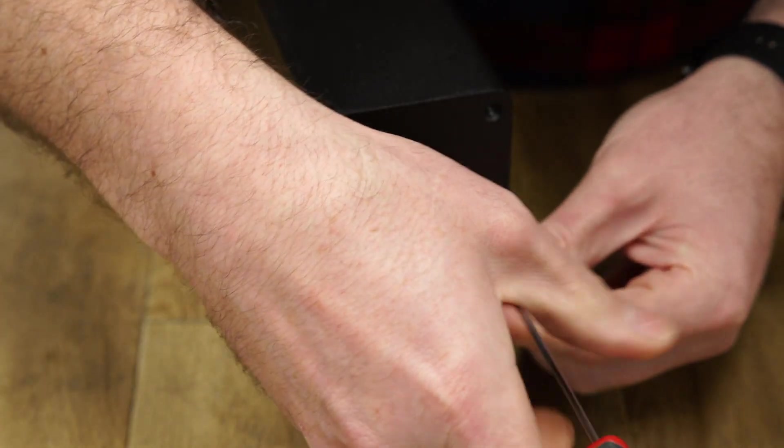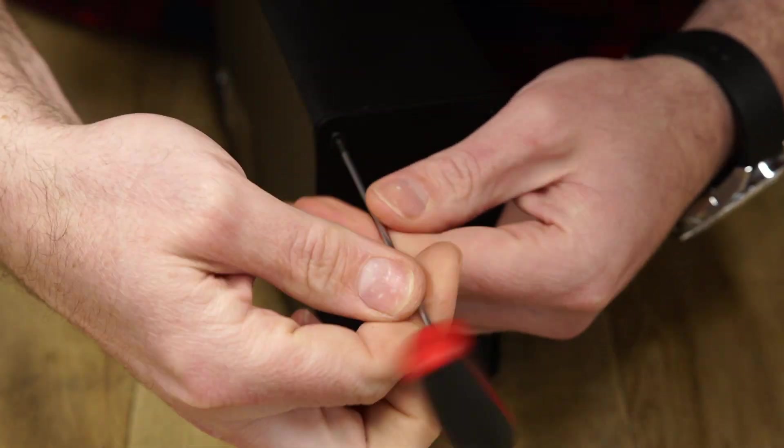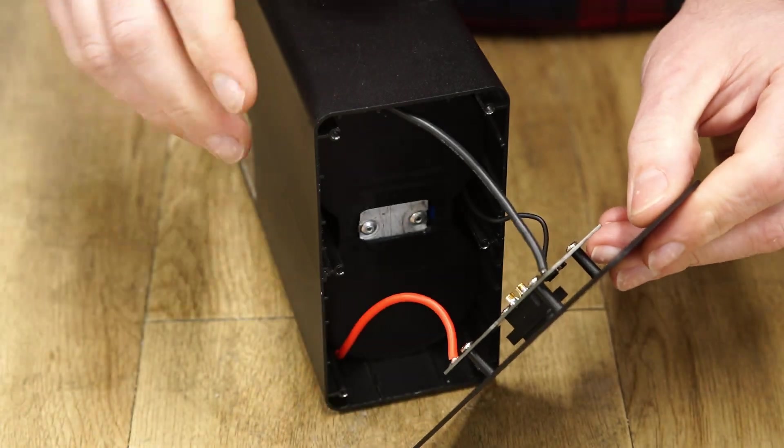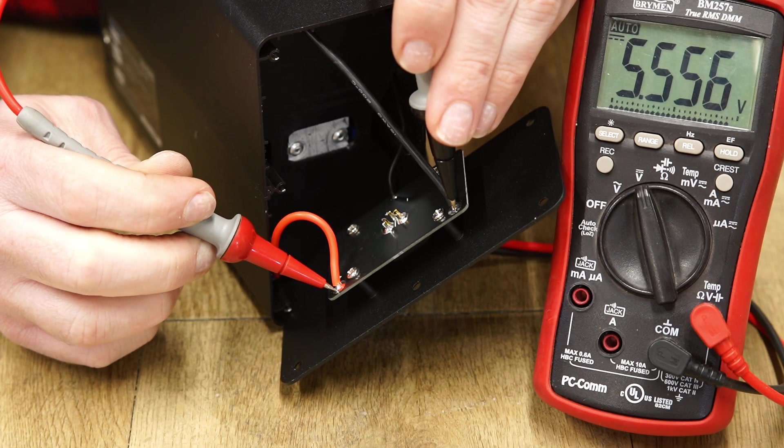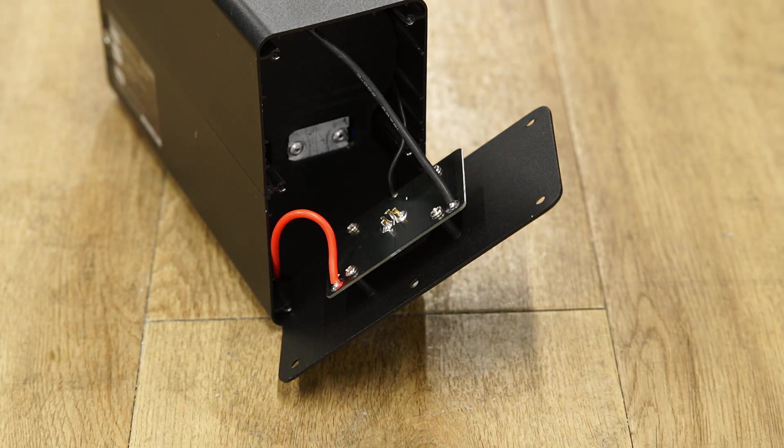Alright now let's tear down the unit and see what makes the spot welder good. The rear cover has a direct connection to the super capacitors. So whatever you do, don't short these contacts or you might meet your maker.